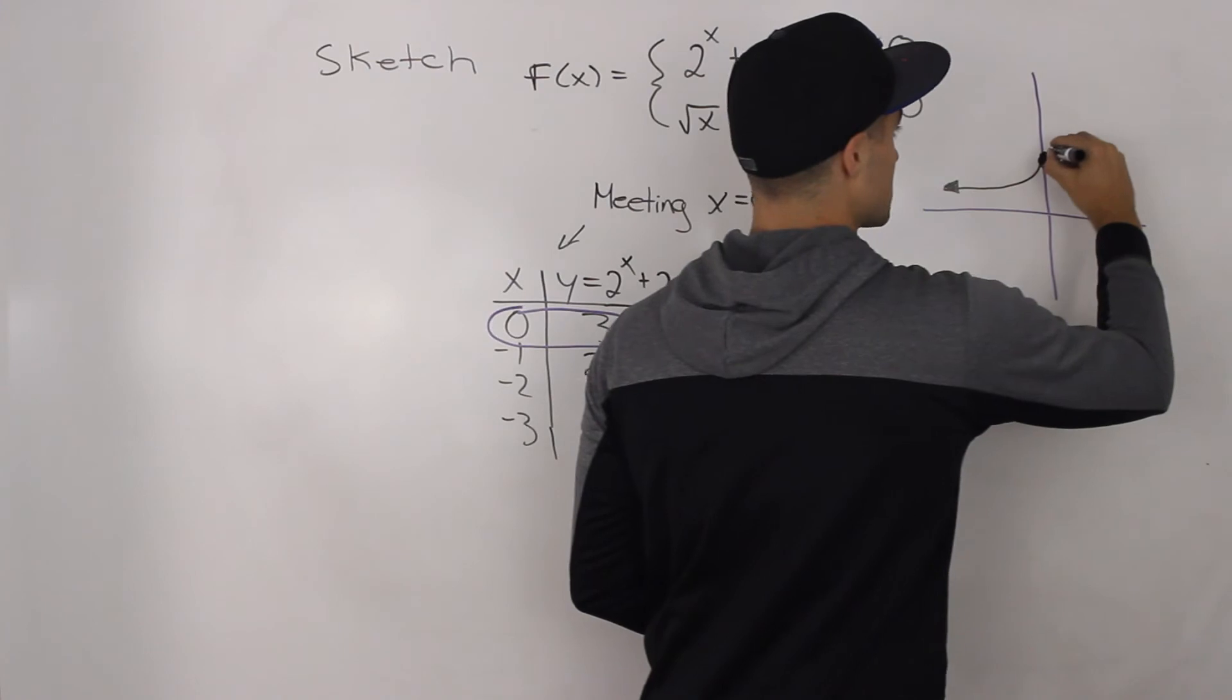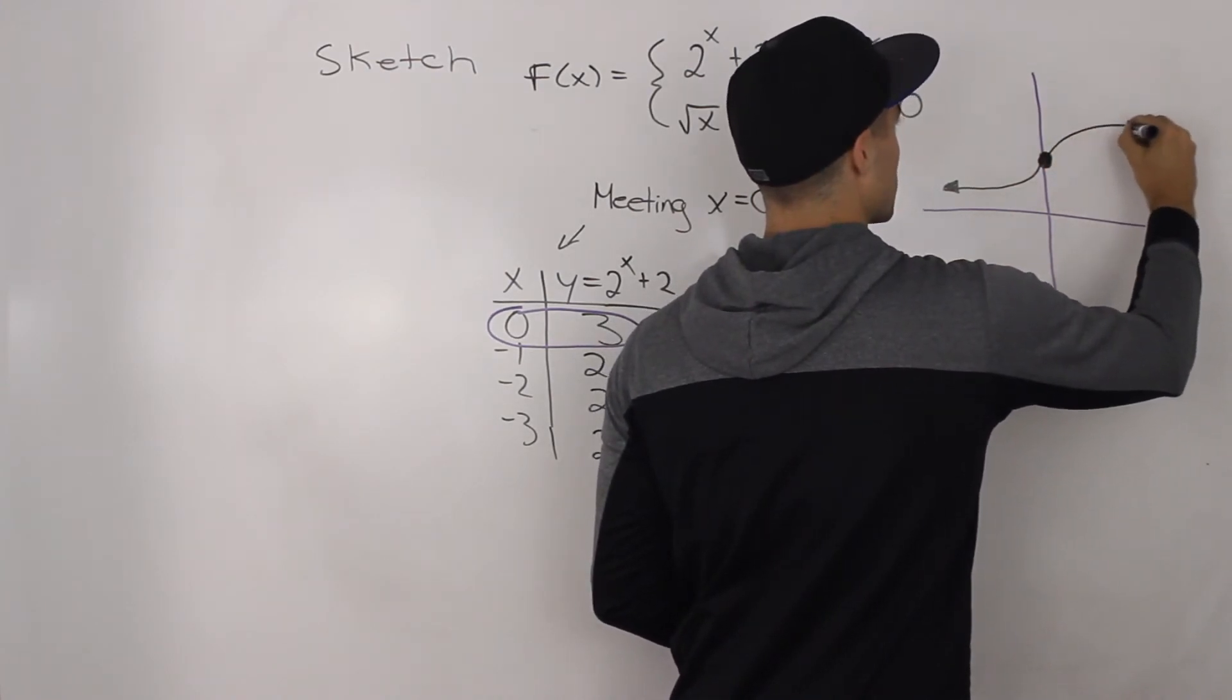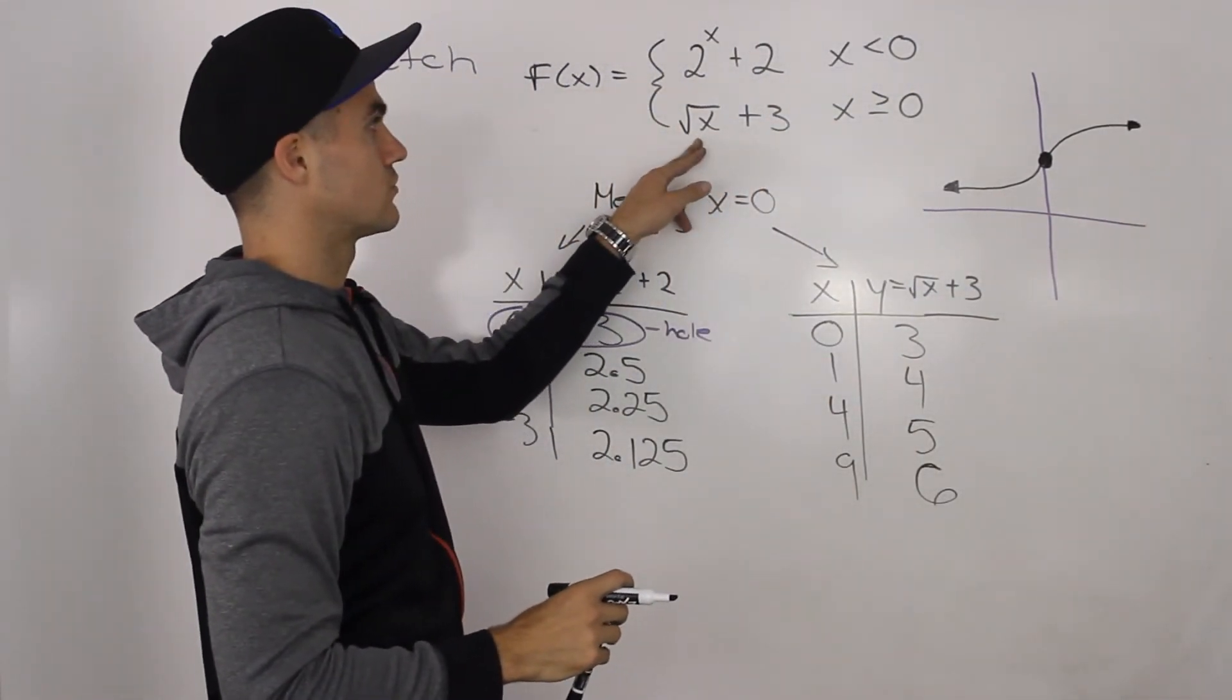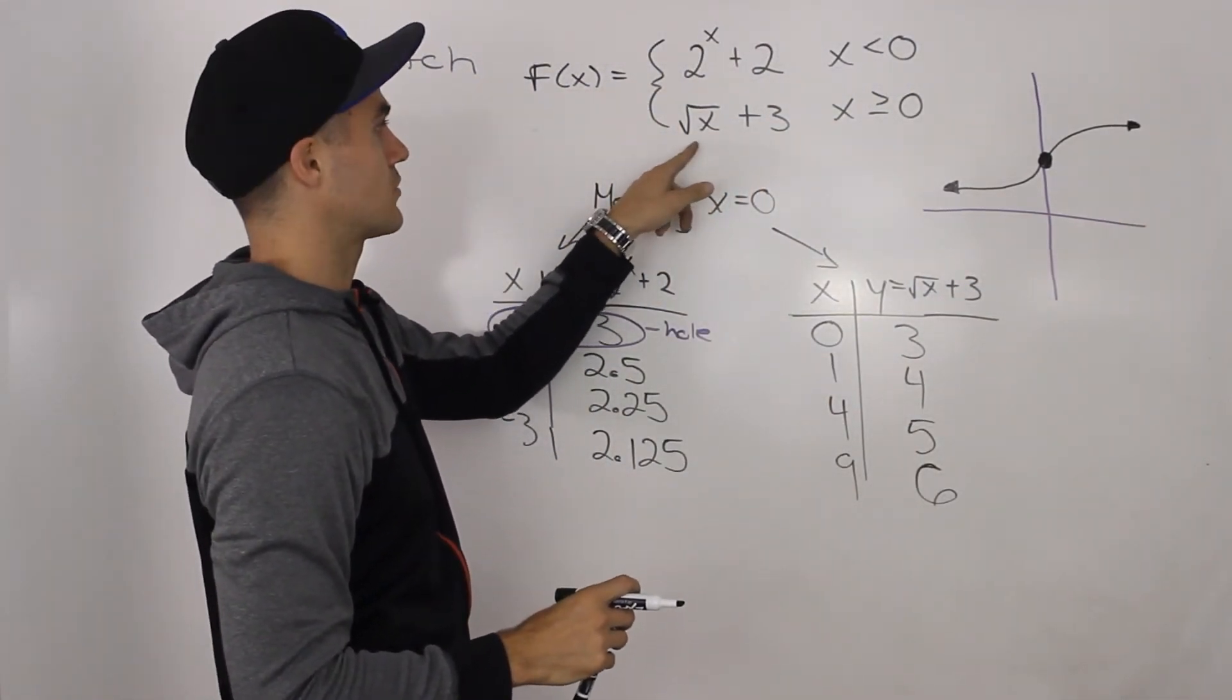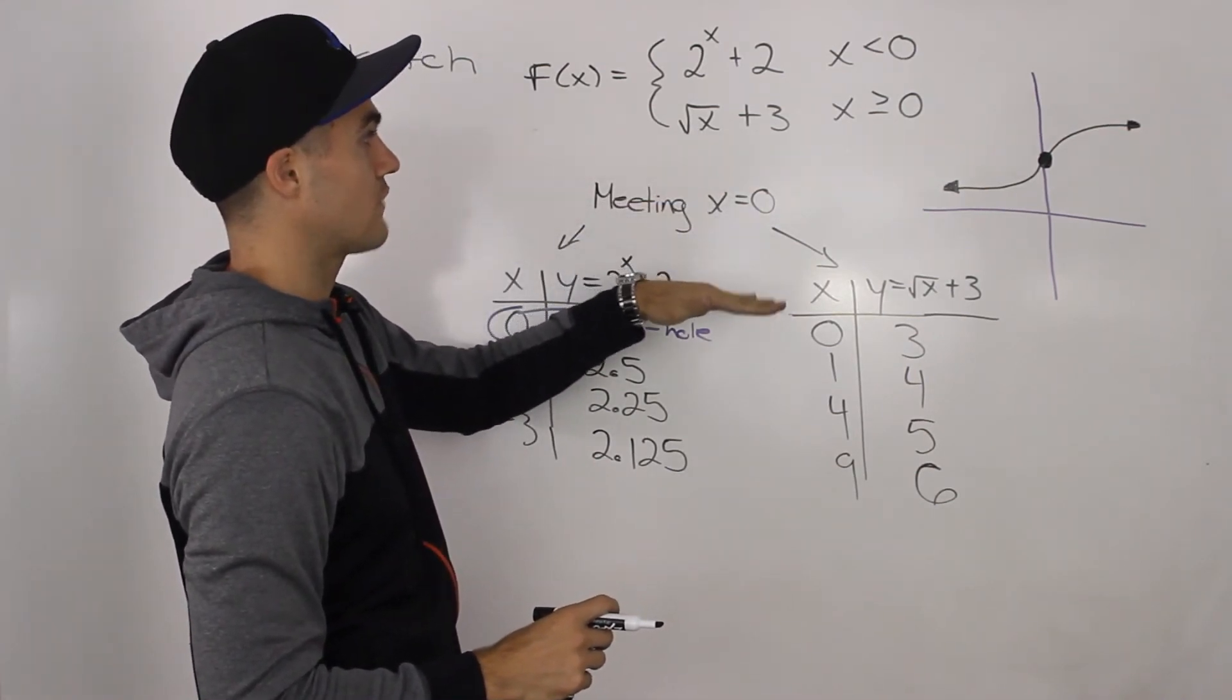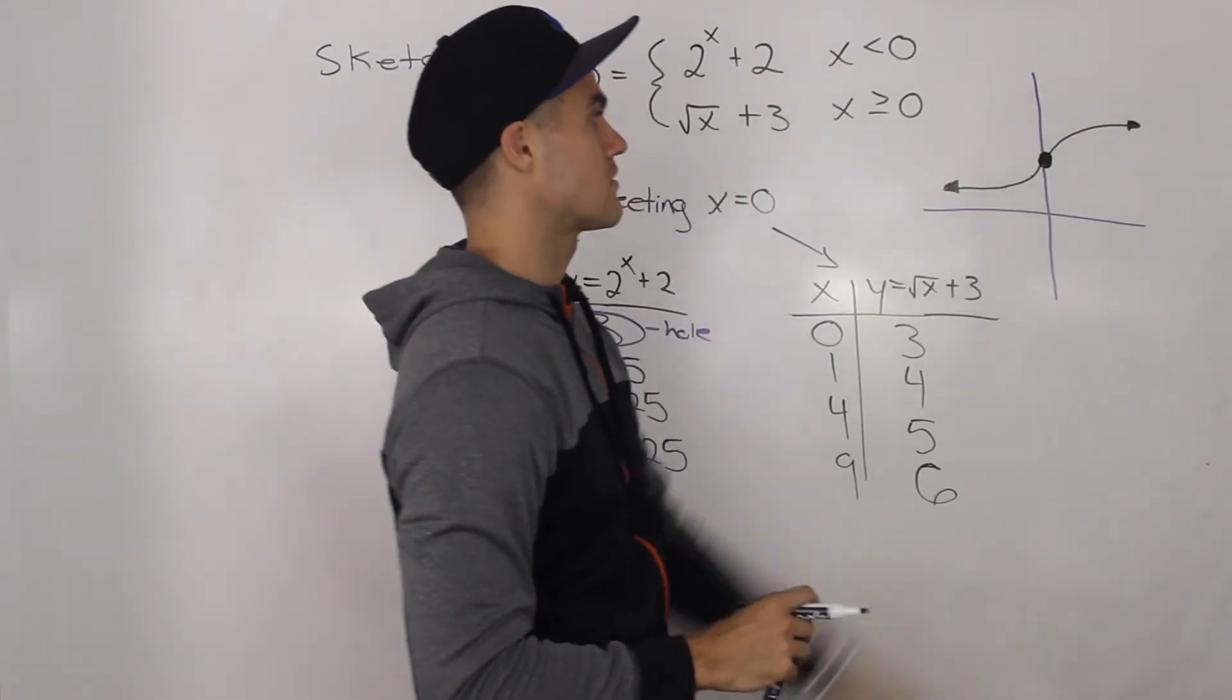And then if we plot the rest of these points, it's going to take this sort of shape. It's just the square root, not the reciprocal, the radical function, the square root of x parent function, and it's been shifted up by three.